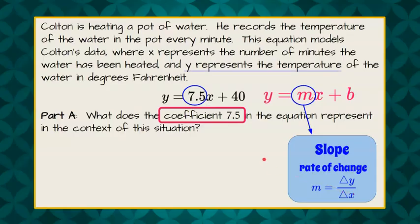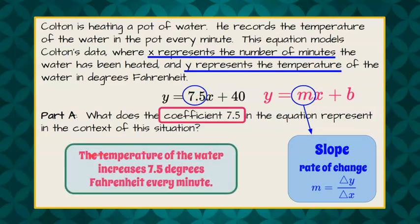So now let's go back up to our problem. Y represents the temperature, and x represents the number of minutes. So we're being asked to identify how the temperature changes by the minute. Our slope is our unit rate. So we can say that the temperature of the water increases 7.5 degrees Fahrenheit every minute.